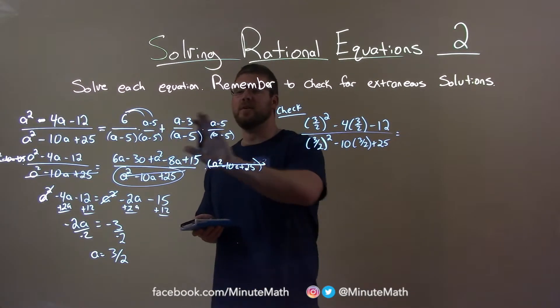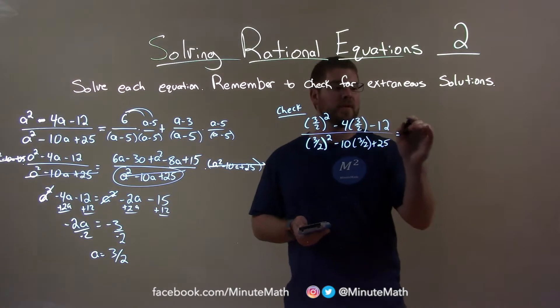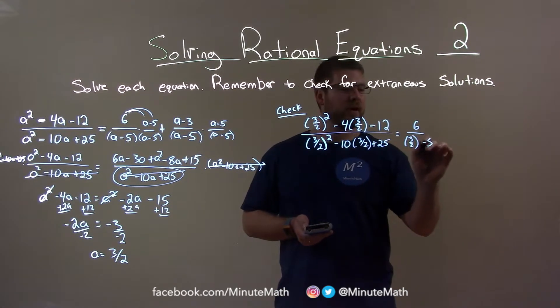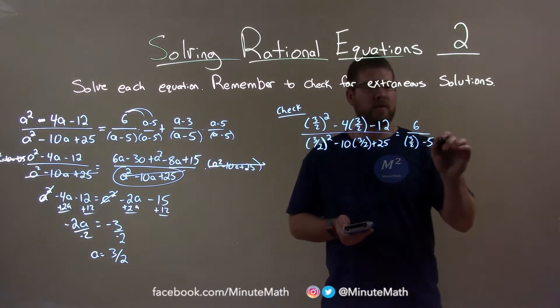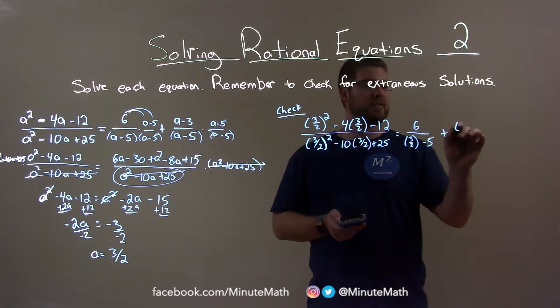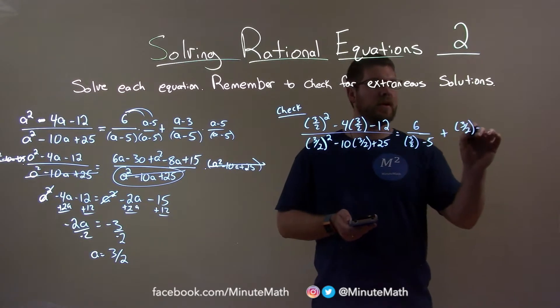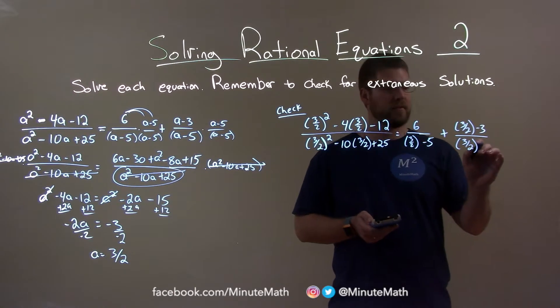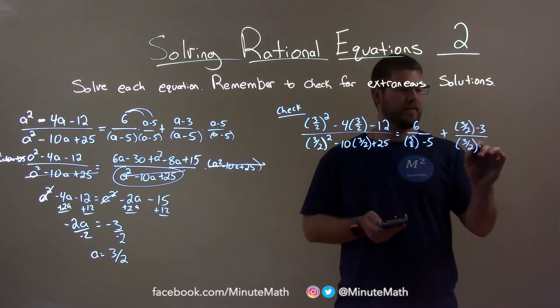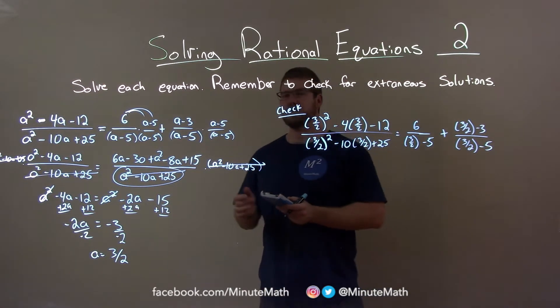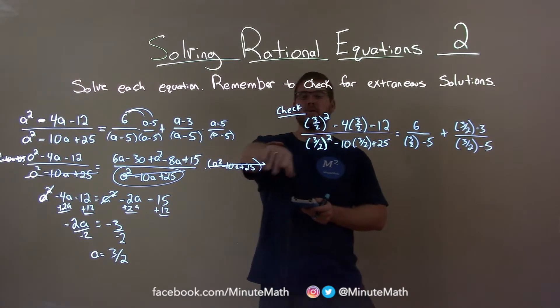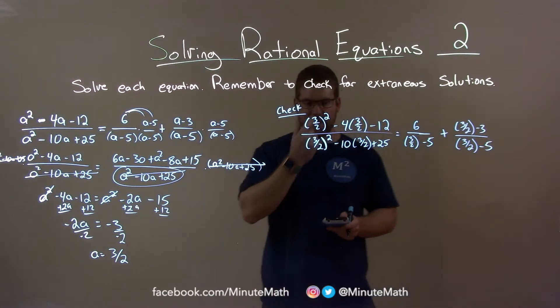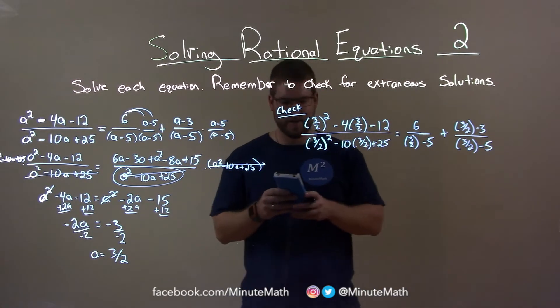Make sure to not ignore the a minus 5 over a minus 5. So: 6 over 3 halves minus 5 plus 3 halves minus 3 over 3 halves minus 5. I'm kind of double checking here. If we don't get the right answer, we can always come back and check that. Looks good to me.